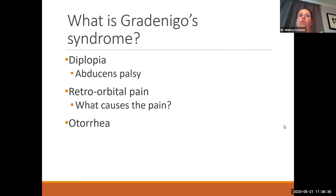Gradenigo syndrome — a hot board topic. It's the triad of: abducens nerve palsy causing double vision; retroorbital pain from inflammation of the trigeminal ganglion causing deep intracranial pain; and otorrhea from chronic otitis media with perforation of the eardrum.